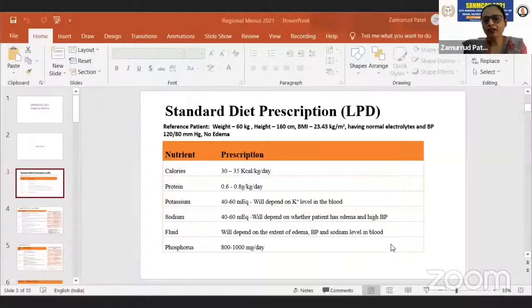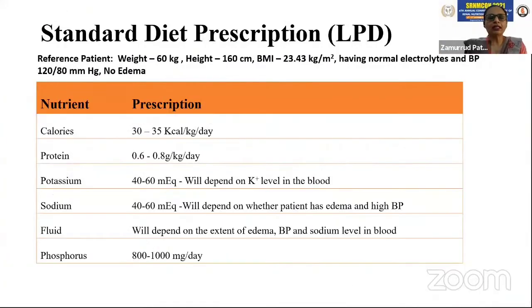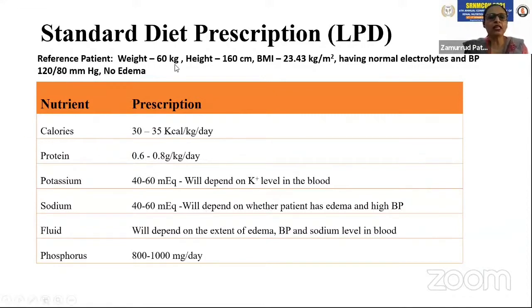For today's workshop, renal diets are best planned according to regional and ethnic food preferences. To give a brief overview of the presentations from various regions, we have taken a standard reference patient weighing 60 kilos, male, height 160 centimeters. This patient has normal electrolytes, high creatinine, and a BP of 120/80.